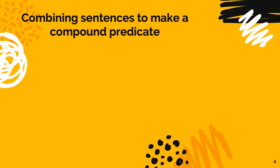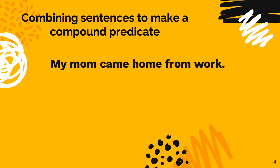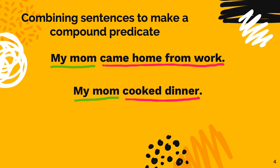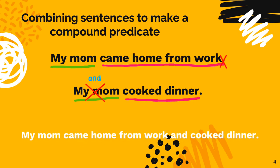We're going to look at how to combine two sentences to form a sentence with a compound predicate. Let's look at these two sentences: 'My mom came home from work' and 'My mom cooked dinner.' These sentences have the same subject — my mom — but different predicates: 'came home from work' and 'cooked dinner.' To combine these sentences, I can get rid of the second 'mom' and the period after 'work' and insert 'and' instead, to make: 'My mom came home from work and cooked dinner.' This is an example of a sentence with a compound predicate.